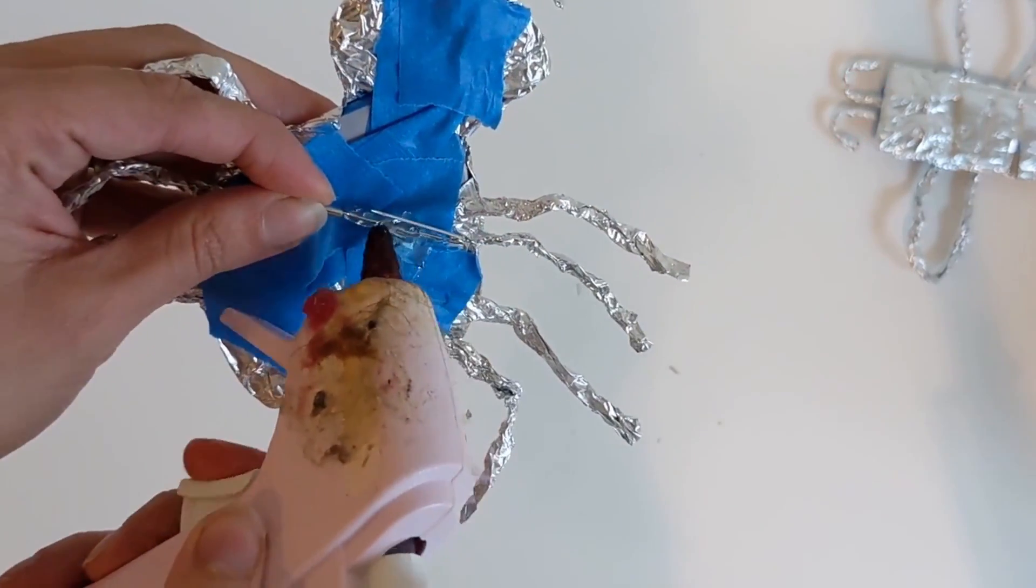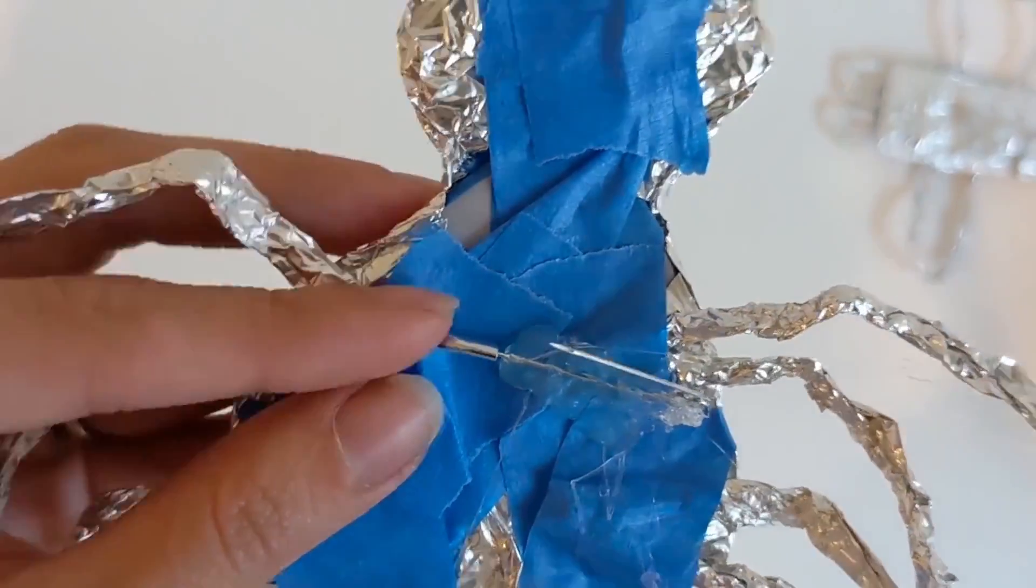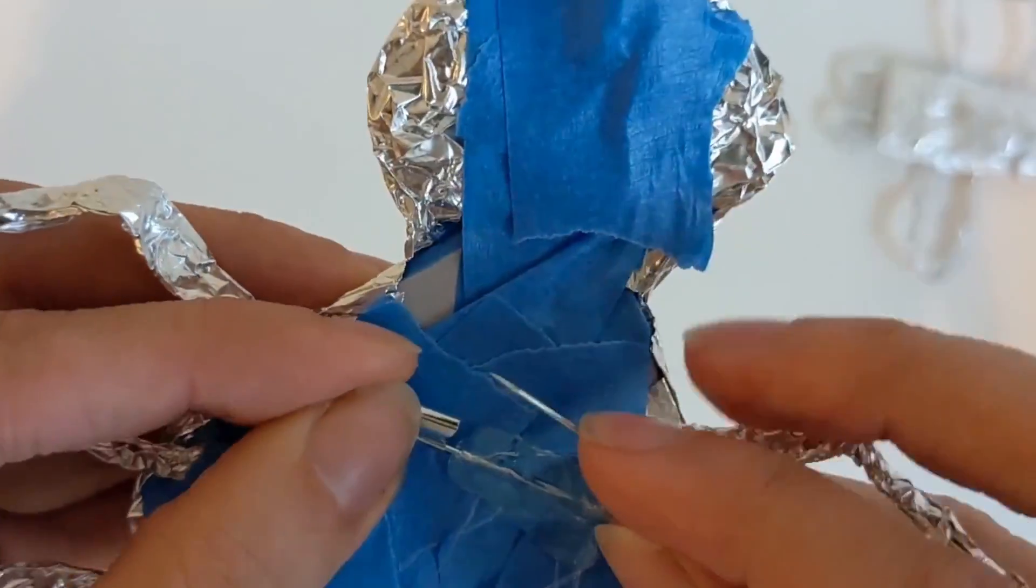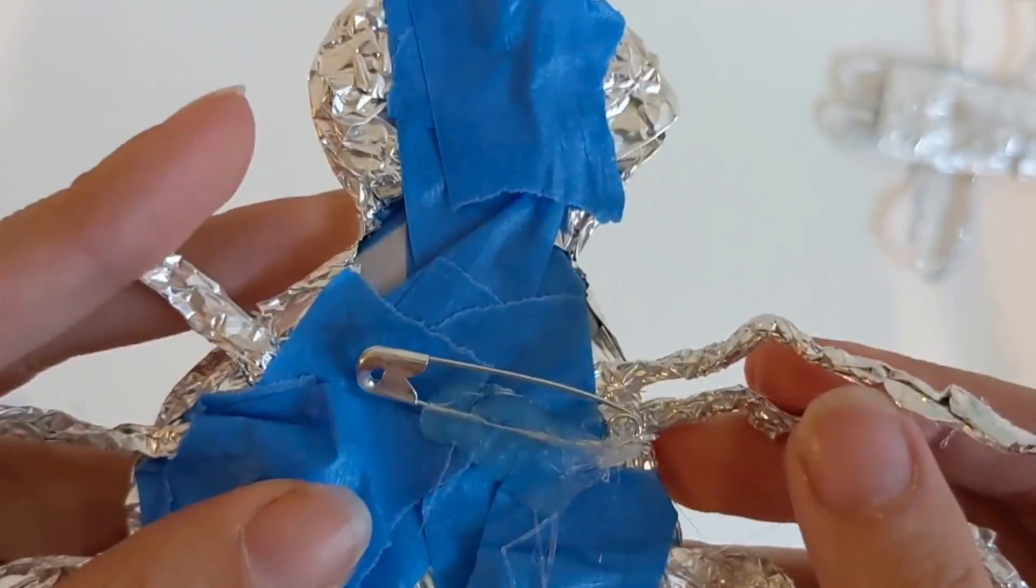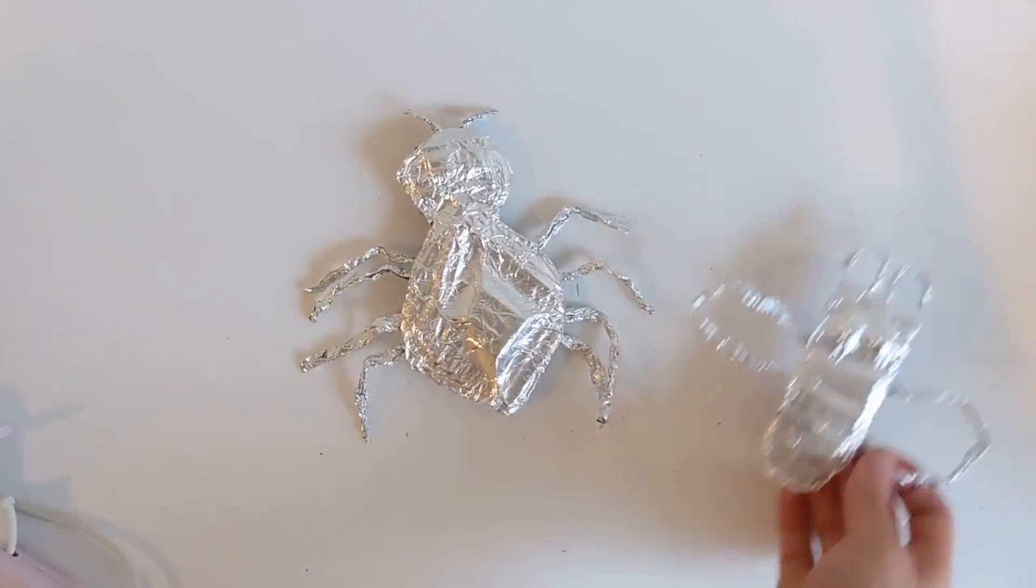Decide where you want to place your pin first. Then use a hot glue gun to carefully put some glue on the base of your shape and then attach your safety pin to the back. Add more glue as you need to make sure that it's really secure.